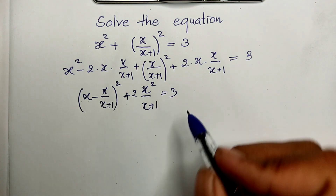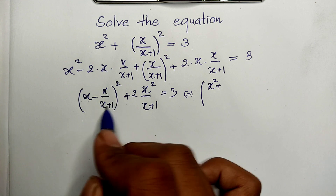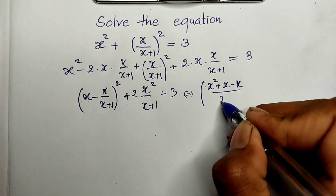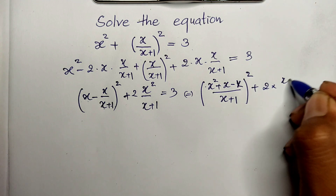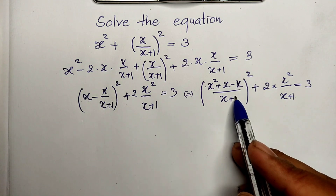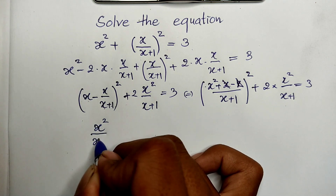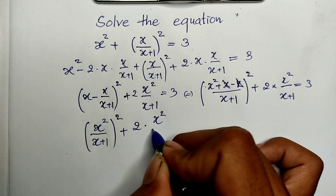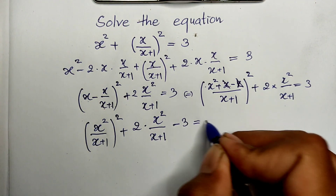Expanding h times h gives h squared. And h times 1 gives h, so we get h squared plus h minus (h divided by h plus 1) all squared, plus 2h squared divided by (h plus 1), equals 3. We cancel terms and get h squared divided by (h plus 1) all squared, plus 2h squared divided by (h plus 1), minus 3, equals 0.